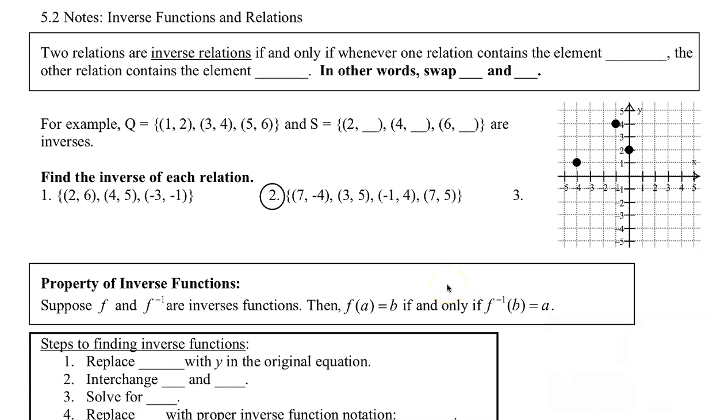Two relations are inverse relations if and only if, whenever one relation contains the element (x, y), the other relation contains the element (y, x). In other words, to figure out inverses, we swap the x and y coordinate of each ordered pair. For example, if we have one relation - a relation is a set of ordered pairs - here's our three ordered pairs.